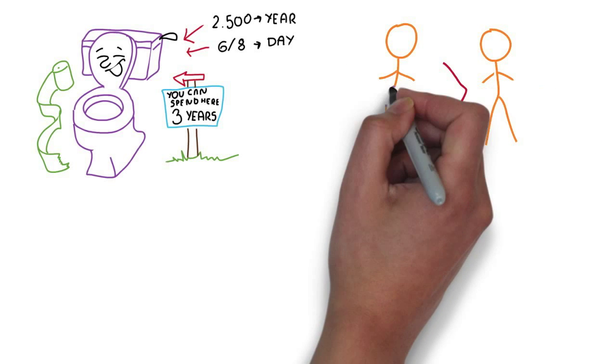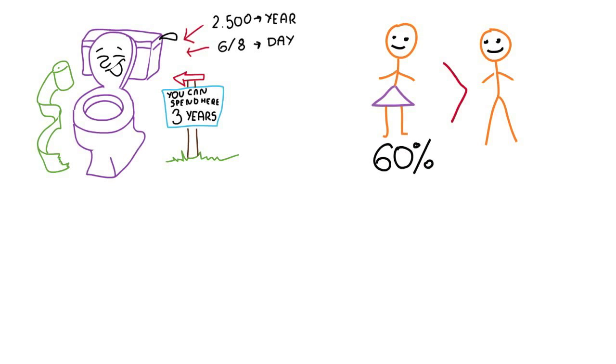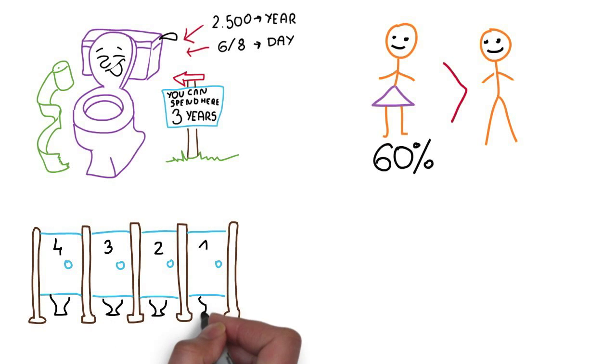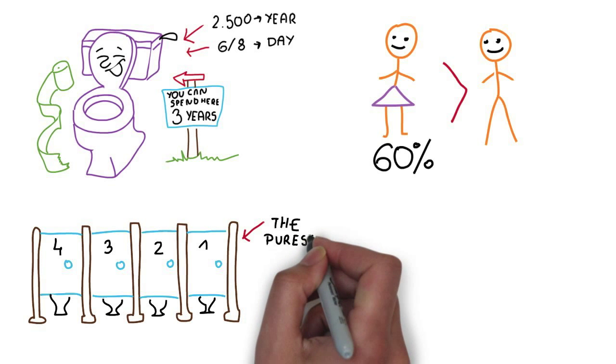Women spend 60% more time in the bathroom than men. Ah, so that's why the men's room is always empty. When at the public toilets, always go to the first toilet cabin in a row, as it's the least used and consequently the cleanest.